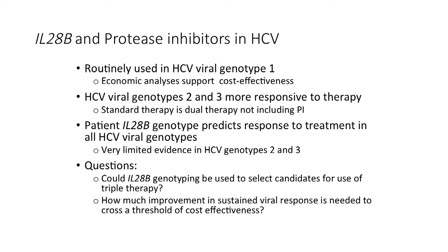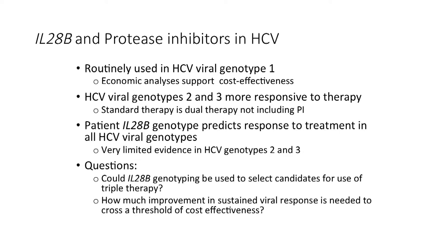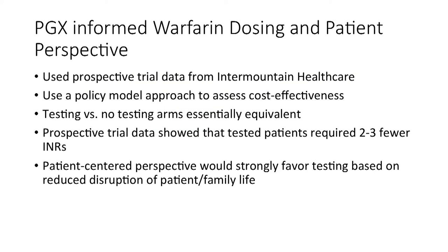How much improvement in sustained viral response is needed to cross a threshold of cost-effectiveness? SVR is the intermediate outcome with a strong chain of evidence to the clinically relevant endpoints. What made this model very nice was that we already had a good economic model towards end-stage liver disease that we could plug our output into. The answer was that you didn't have to get a lot of improvement in sustained viral response to really be cost effective. If you did the IL-28B testing and did triple therapy for those with a resistant genotype, all you needed was a 2% improvement in sustained viral response across this cost-effectiveness threshold, versus an 11% improvement if you treated all patients. We published this, and then the new antivirals came out and made it all irrelevant.